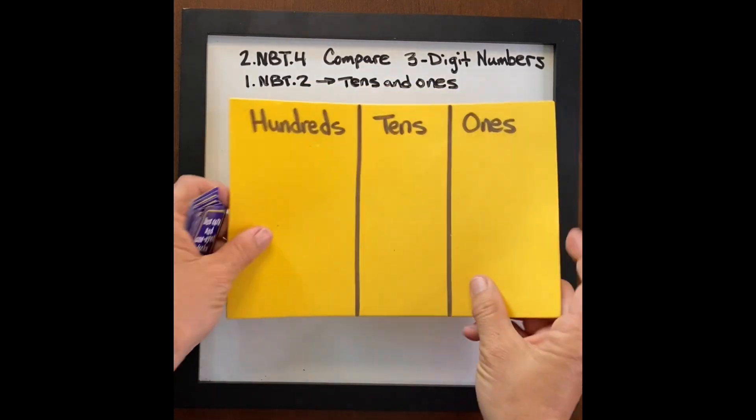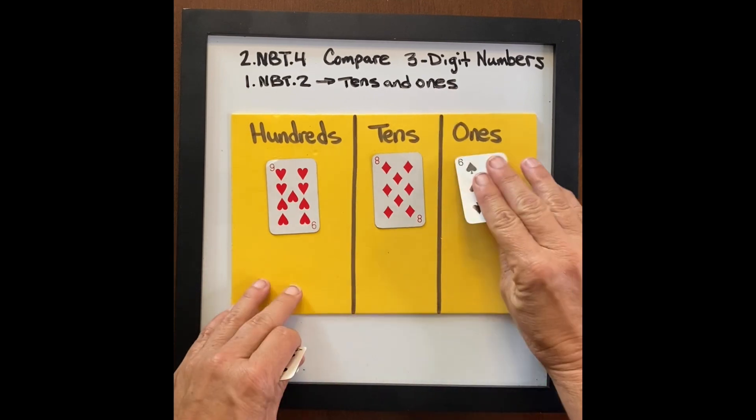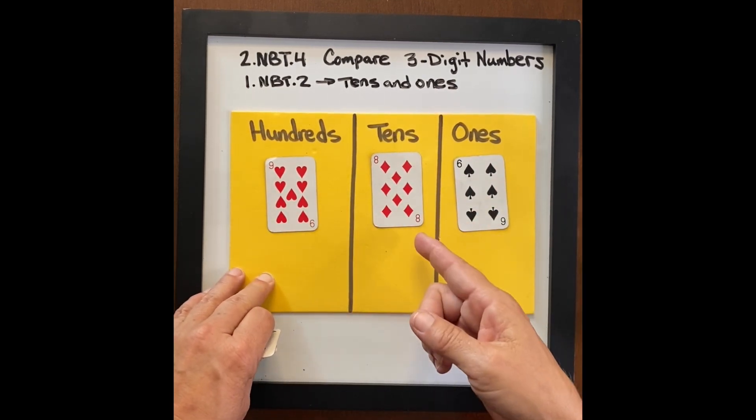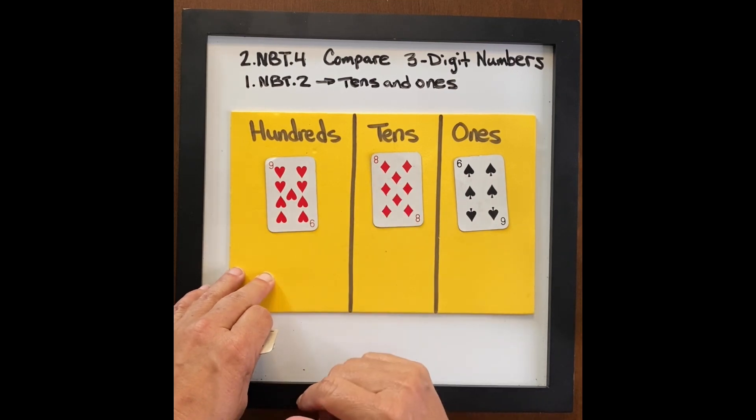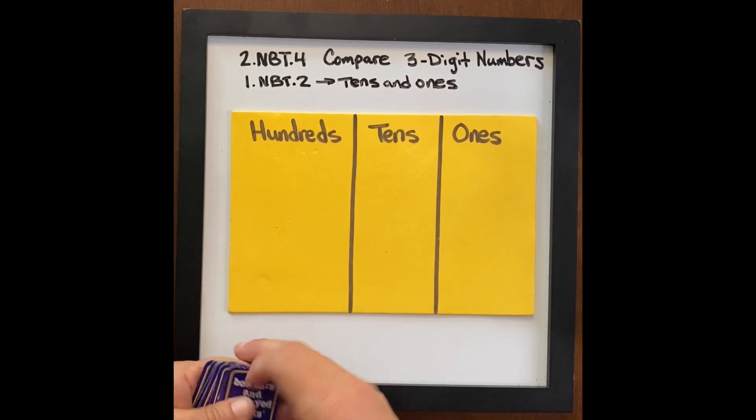So then let's turn over the foam mat and let's do the same concept with hundreds. Often what happens is this activity becomes how many tens are there? There's eight tens. How many hundreds are there? There's nine hundreds. But instead, let's offer a different way to look at this.